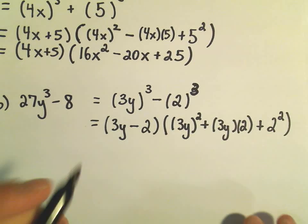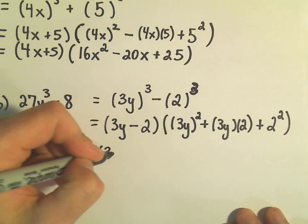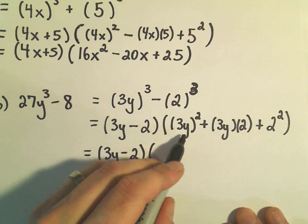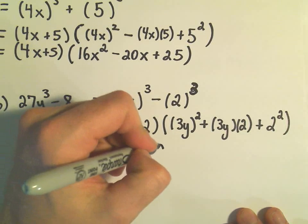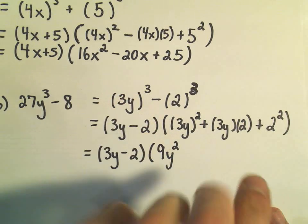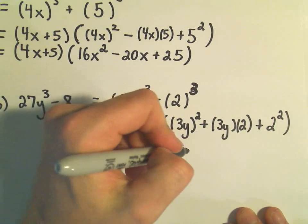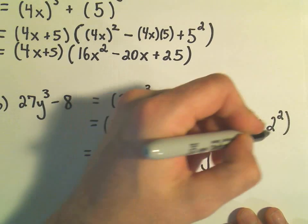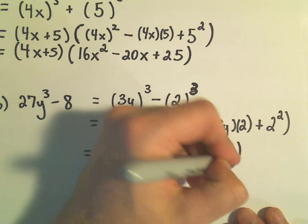So if we simplify this, we'll get 3y minus 2. 3y times 3y will give us 9y². 3y times 2 will give us positive 6y. And then 2 squared will give us a positive 4.